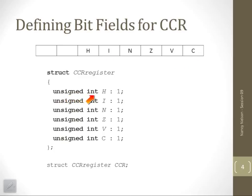I'm going to use an unsigned integer for each. H requires 1 bit, I requires 1 bit, N, Z, V, and C each require 1 bit. So in total I'm using 6 bits, even though it looks like I'm using 6 unsigned integers.